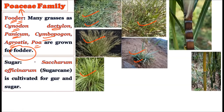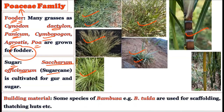Some members are also used as fodder for animals. Grasses used as fodder include Cynodon dactylon grass, Panicum grass, Cymbopogon grass, Agrostis grass, and Poa grass — used naturally or artificially as food for agricultural animals.